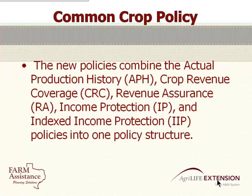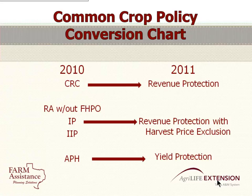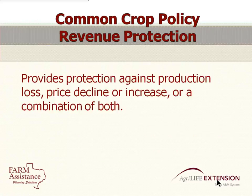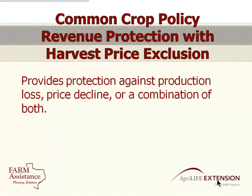The common crop policy combines the old APH, CRC, RA, IP, and IIP into one policy structure. CRC became Revenue Protection. RA without harvest price option, the IP and IIP became Revenue Protection with the harvest price exclusion. APH became the YP — yield protection. Revenue Protection provides protection against loss from price declines or increases, or also production losses.